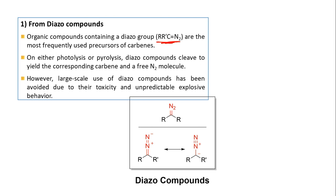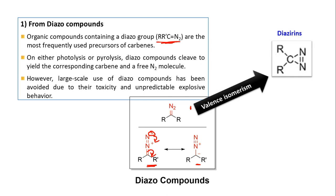For the detailed structure of diazo compounds: these two structures can be interconverted by resonance. This negative charge, if it is making another bond, then there will be a negative charge over carbon — so this is another possible structure. Now if we follow valence isomerism, you can also get the structure diazerine, which is basically a constitutional isomer for diazo compounds, possible to get only by pericyclic reaction.